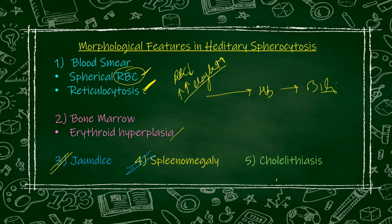And lastly, cholelithiasis — because excess bilirubin gets deposited in the gallbladder, causing inflammation and stone formation in the gallbladder. These features, if you watch the previous video on hemolytic anemia where general points were discussed, you can relate all these points from there. Hereditary spherocytosis involves extravascular hemolysis, meaning hemolysis occurs in the spleen.